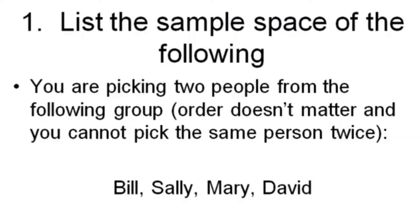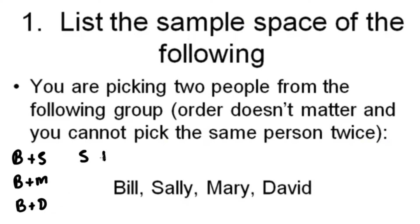List the sample space: you are picking two people from a group of Bill, Sally, Mary, and David. Order doesn't matter and you cannot pick the same person twice. So: Bill and Sally, Bill and Mary, Bill and David, Sally and Mary, Sally and David, and Mary and David. That is the sample space.